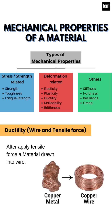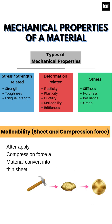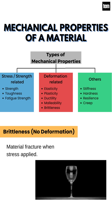Ductility: after applying tensile force, a material is drawn into wire. Malleability: after applying compression force, a material is converted into a thin sheet.